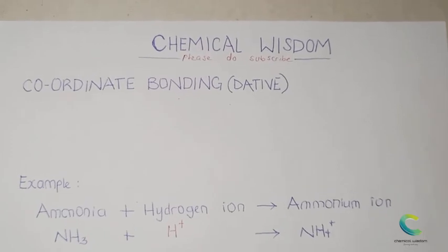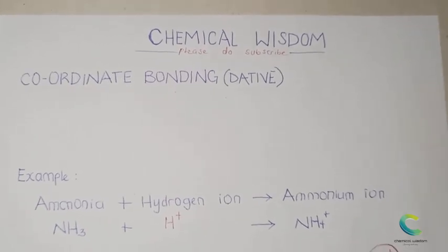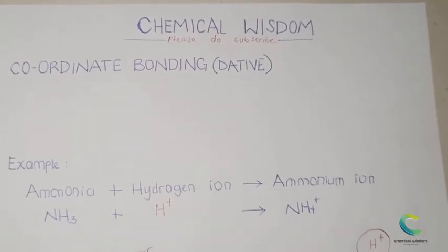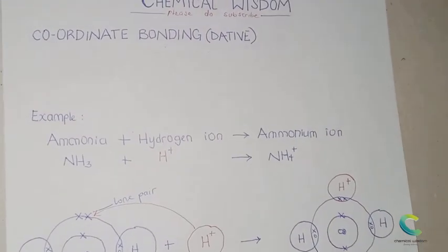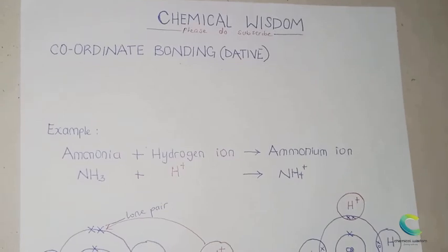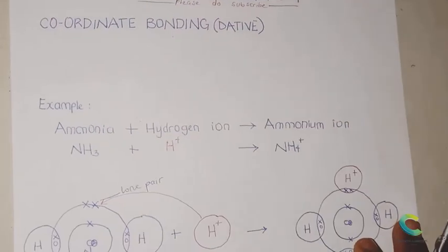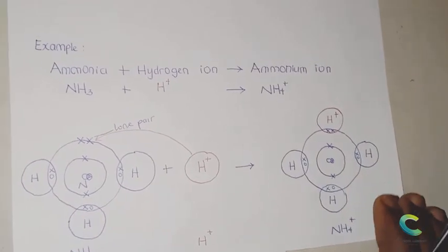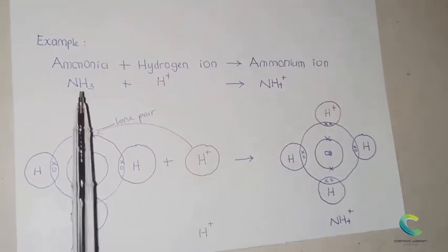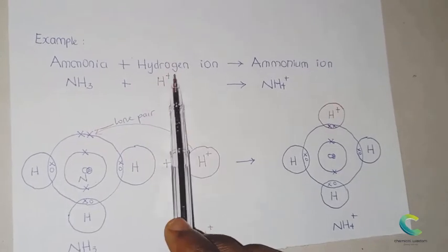Welcome to Chemical Wisdom. Today we are going to be dealing with coordinate covalent bonding, or dative bonding, which is quite similar to covalent bonding. Covalent bonding involves equal sharing of electrons between atoms, but in dative bonding the electrons are not shared equally. For example, let's look at the reaction between ammonia and hydrogen ion to produce ammonium ion.